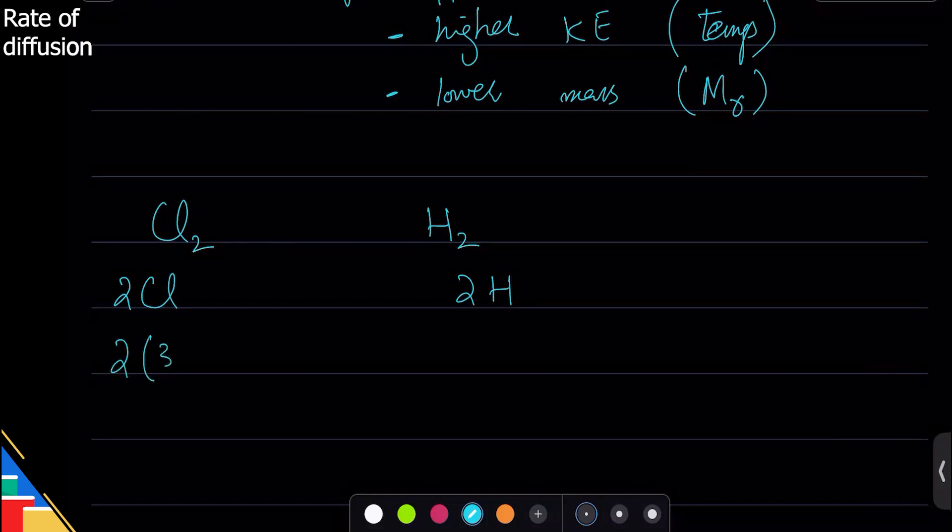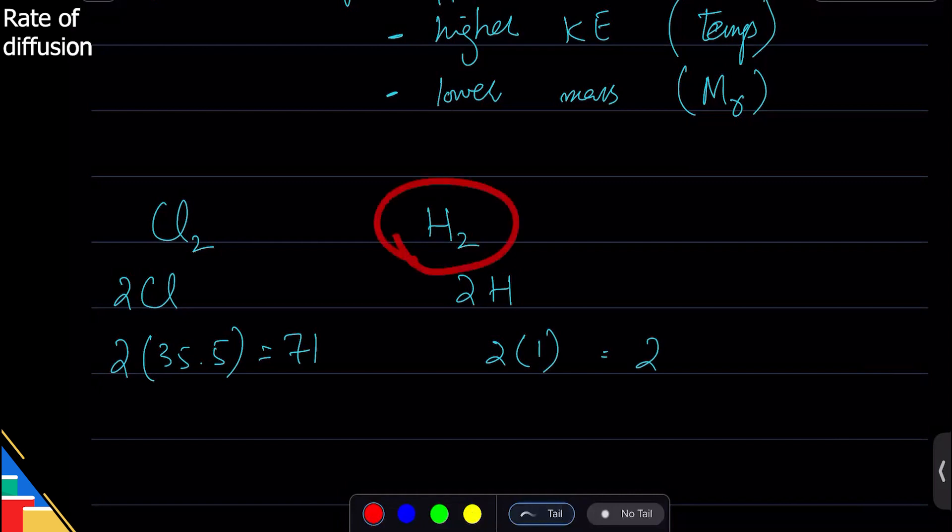Chlorine's mass is 35.5, from the periodic table, so that's a mass of 71. And for hydrogen the mass is one, so two times one that is still two. So we can clearly see that hydrogen has a low mass and if temperature is the same, hydrogen is much much faster at diffusion than chlorine.